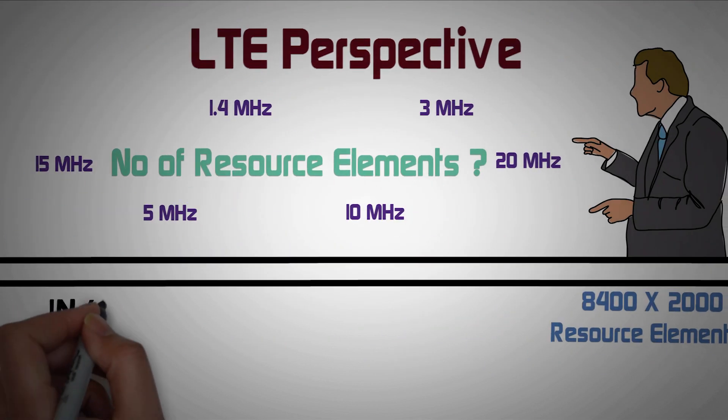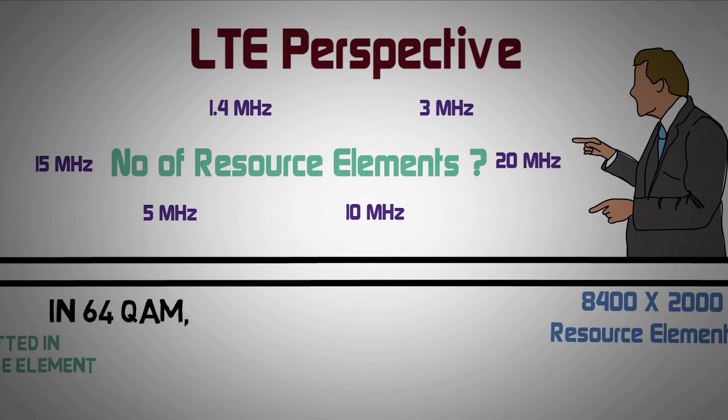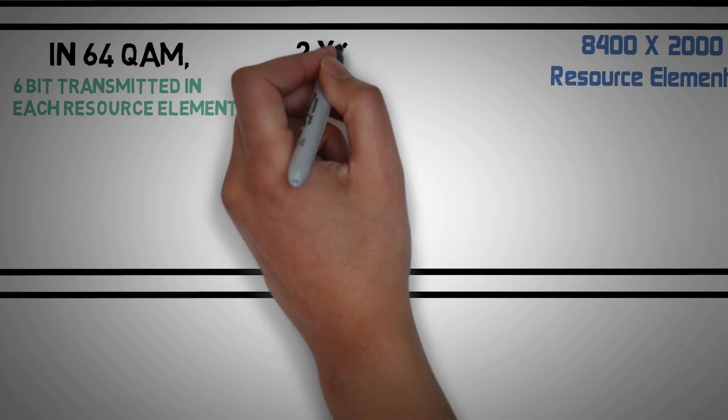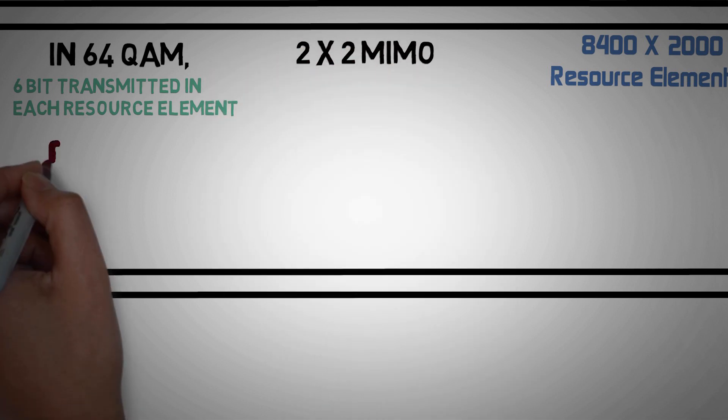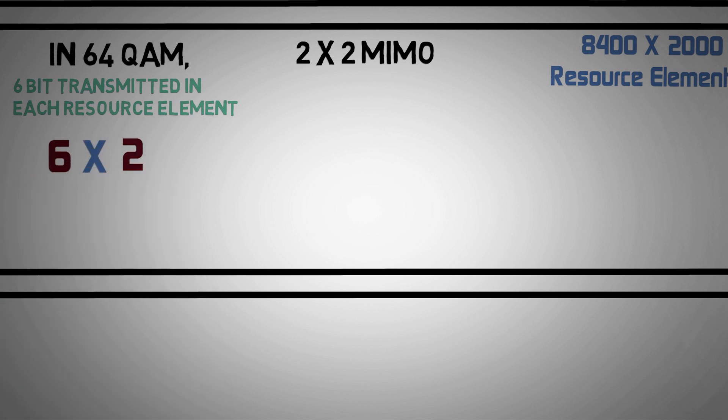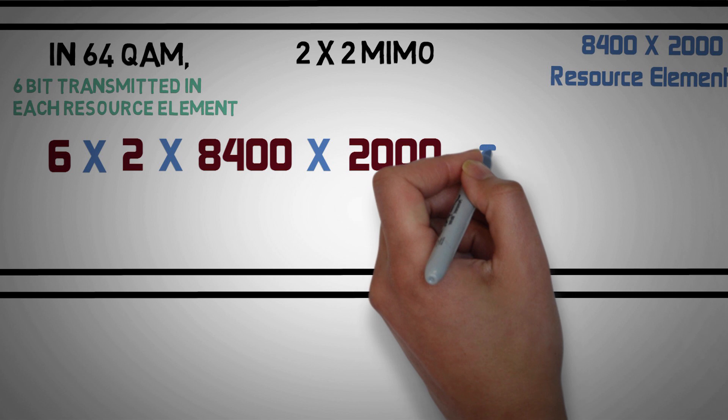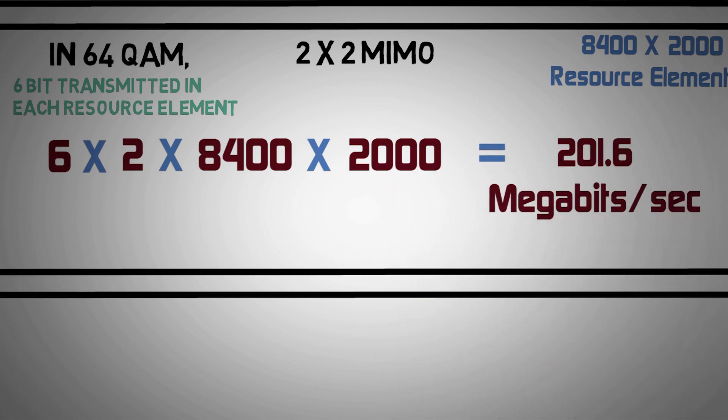Now in 64 QAM modulation scheme, 6 bits can be transmitted on each resource element, and assuming 2x2 MIMO is used, we get a total throughput of 6 multiplied by 2 multiplied by 8,400 multiplied by 2,000, which is 201.6 megabits per second.